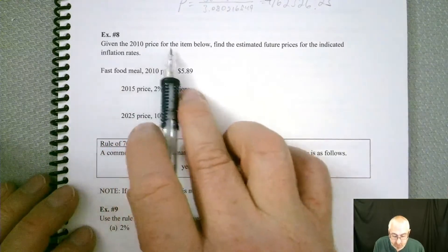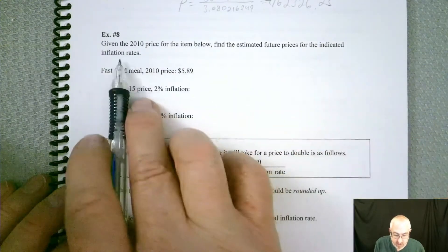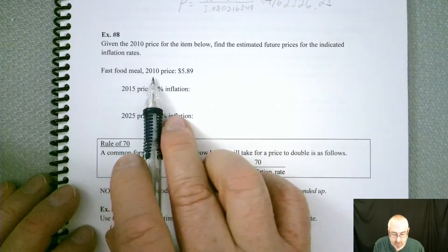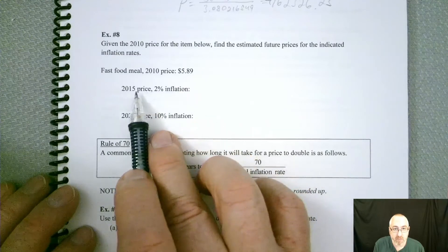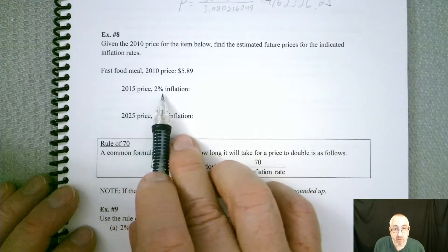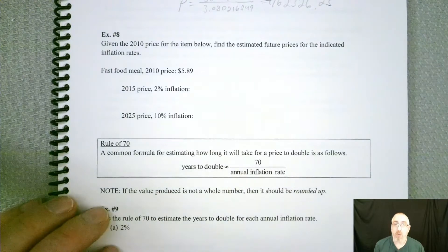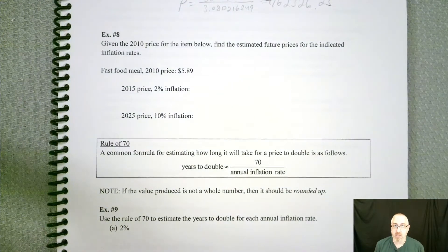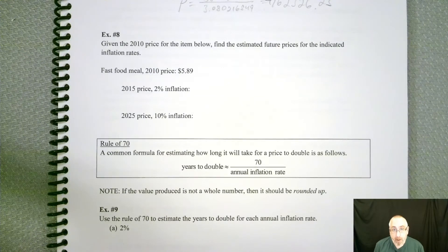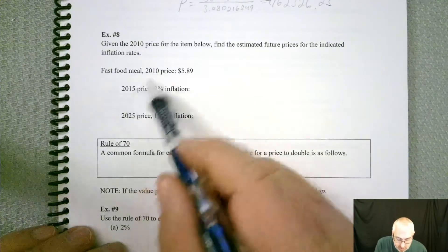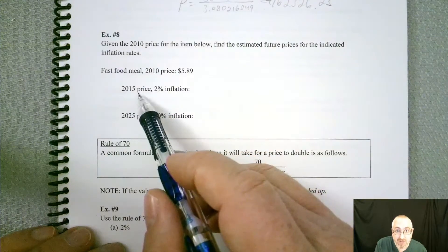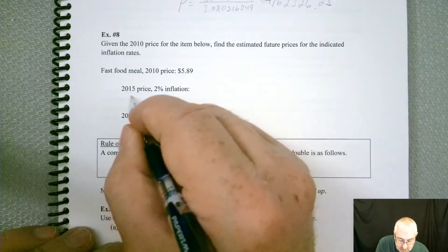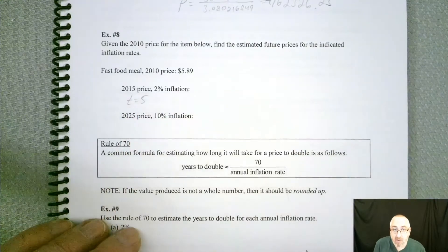All right, so let's see. Given the 2010 price for the item below, find the estimated future prices for the indicated inflation rates. Fast food meal, 2010 price was $5.89. So what would be the 2015 price if it was a 2% inflation rate? Now, the one trick, if you will, for this one is they're not explicitly telling you what the time frame is. But we can figure that out, right? If we're starting in 2010 and we're going to 2015, the only amount of time that's passed is five years.